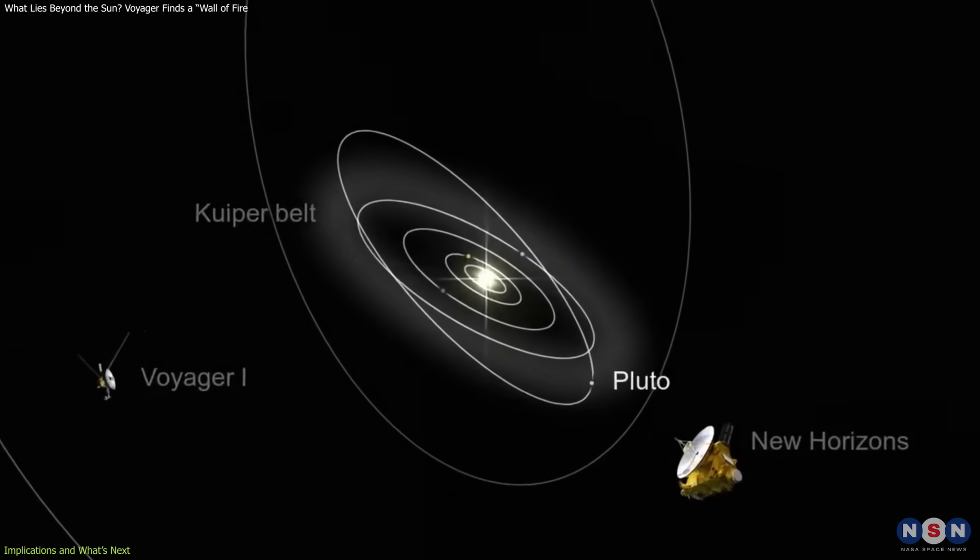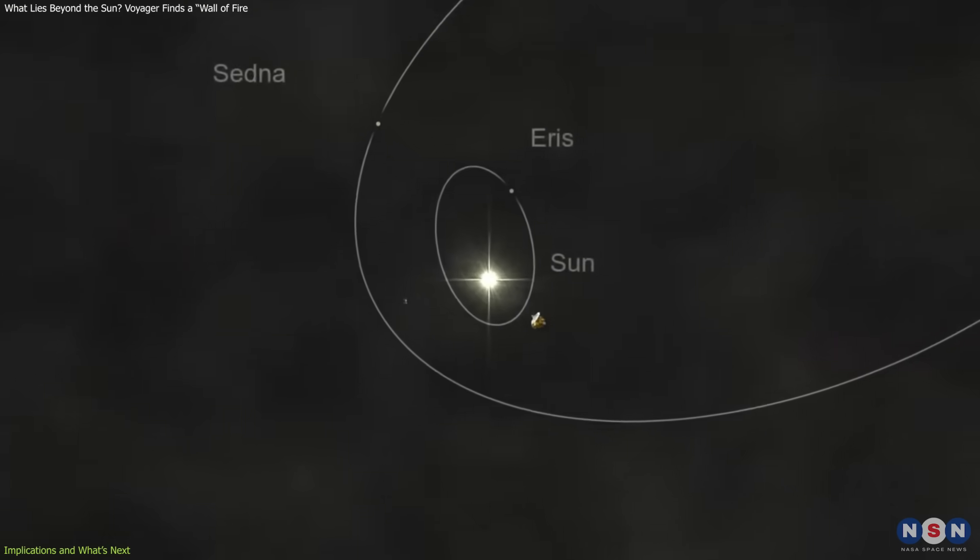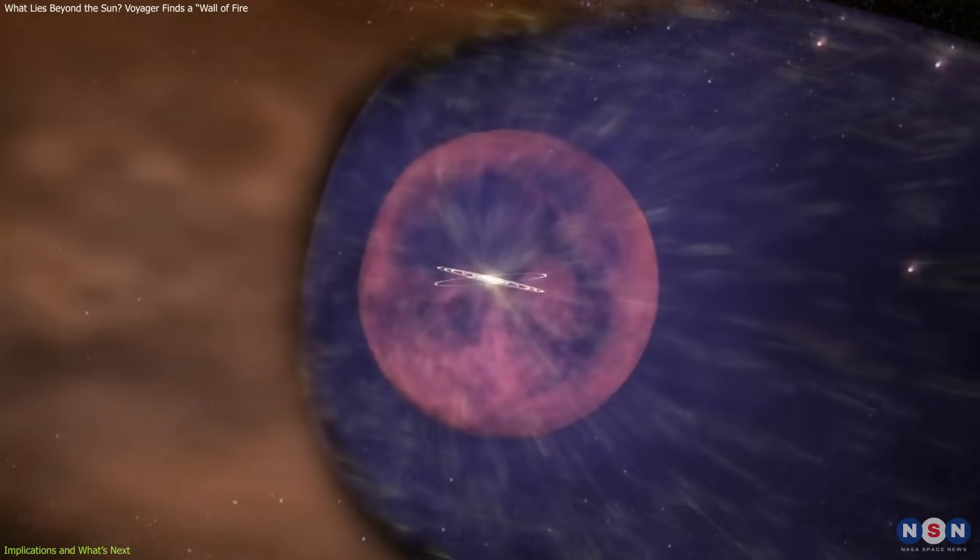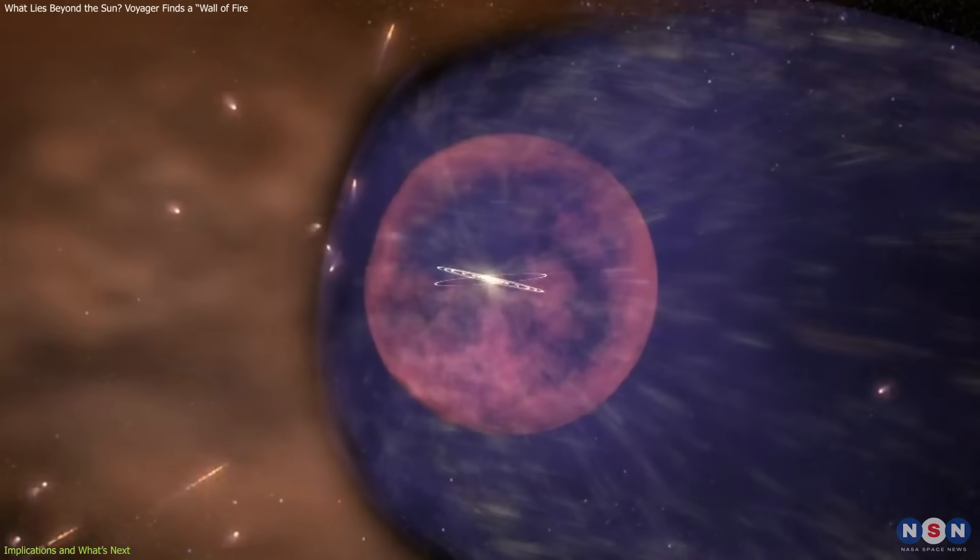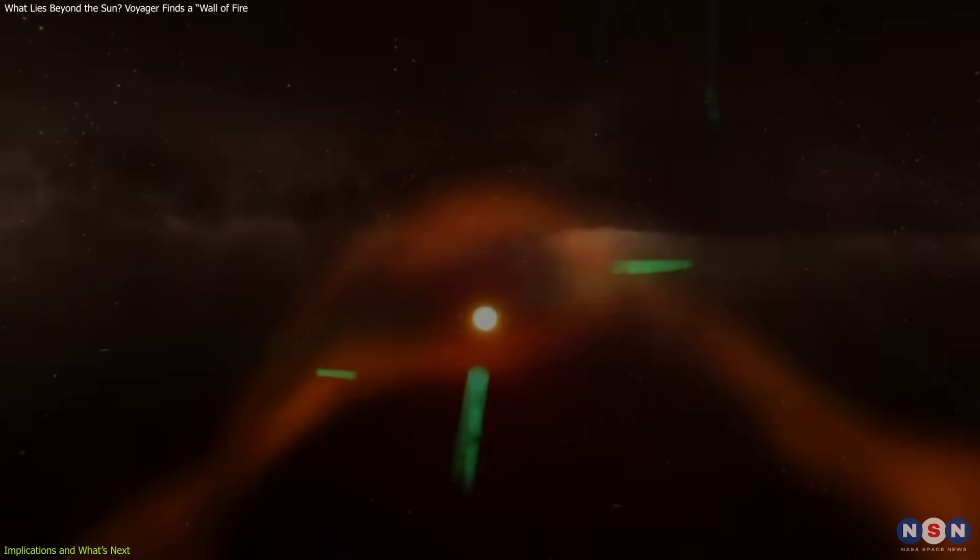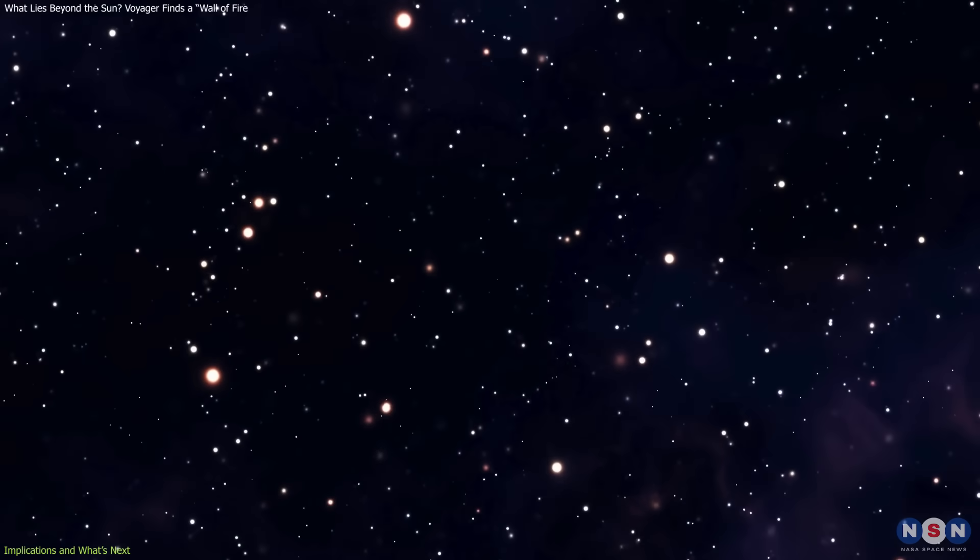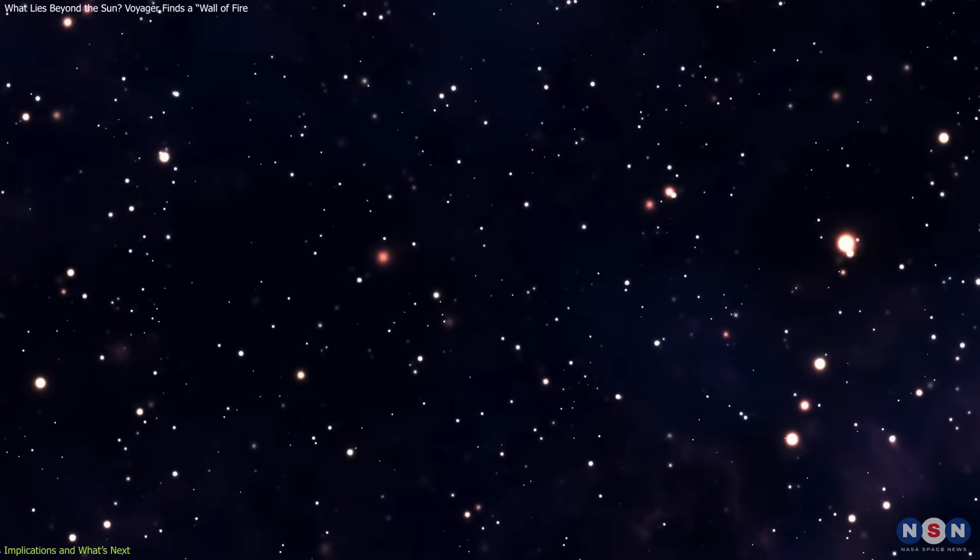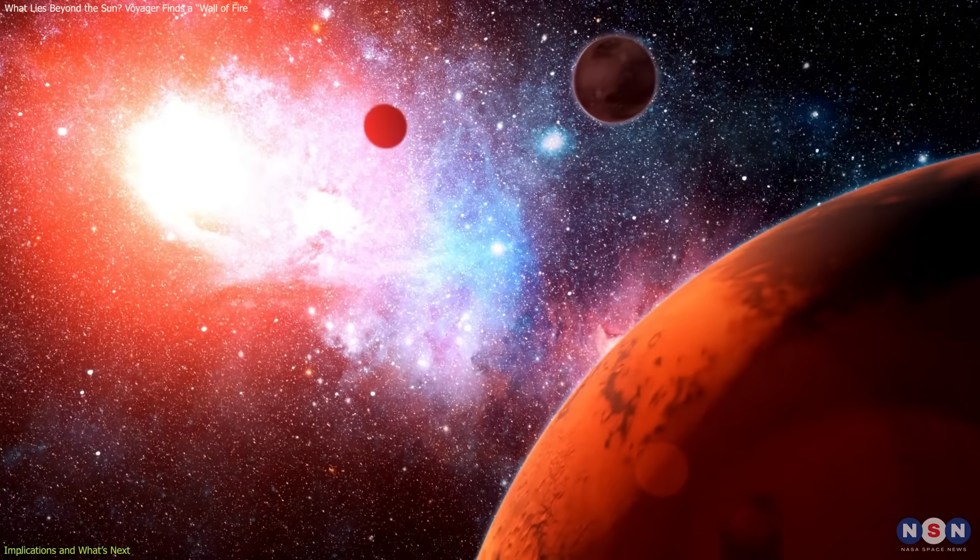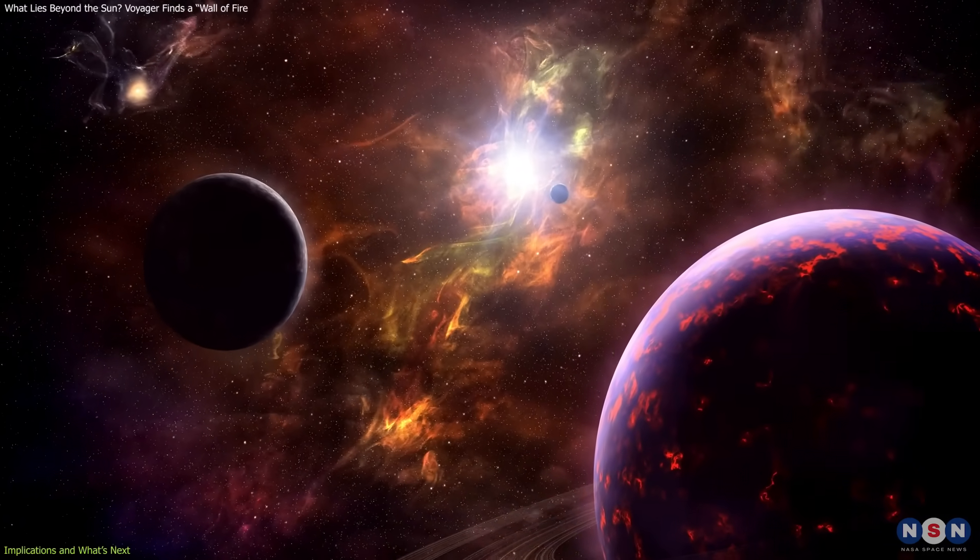This finding also has broader implications for astrophysics beyond our solar system. If our heliosphere interacts with the interstellar medium in this way, other stars' protective bubbles may behave similarly. Studying these processes offers insight into how stellar systems across the galaxy shield their planets from cosmic radiation and interact with their environments.